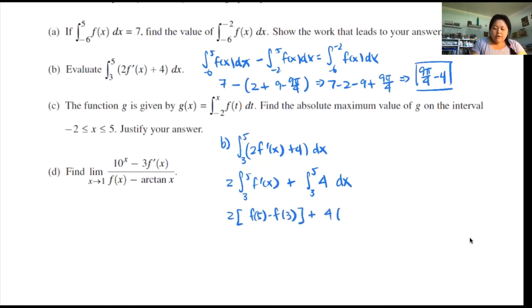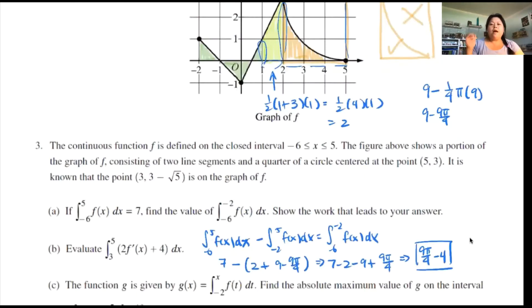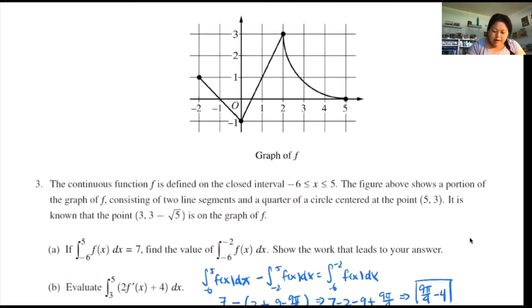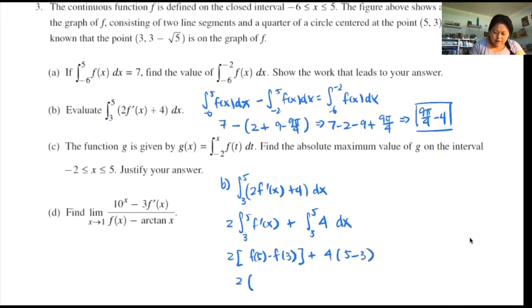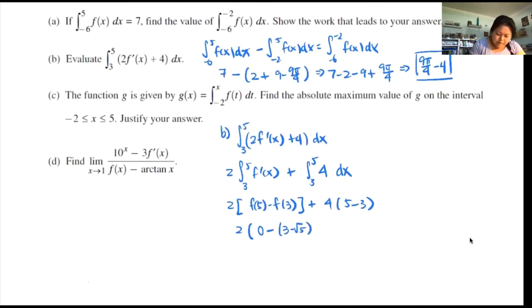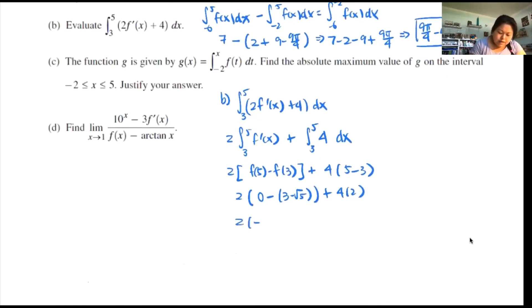The constant piece is 4 times (5 minus 3). Looking at the graph, f(5) is 0 — the y-value there is zero. And f(3): the problem told us the y-value at x equals 3 is 3 minus root 5. So we have 0 minus (3 minus root 5) plus 4 times 2. Distributing: negative 3 plus root 5 plus 8. Combining: 2 plus 2 root 5. Wait — let me redo: negative 3 plus root 5 plus 8 gives 5 plus root 5... actually distributing carefully gives 2 plus 2 root 5 as the final answer.